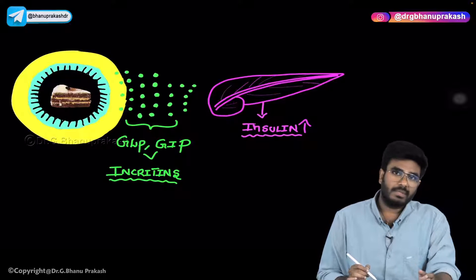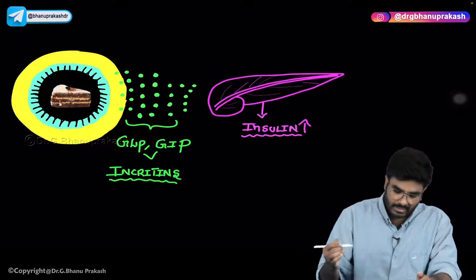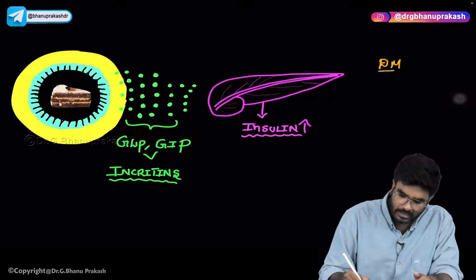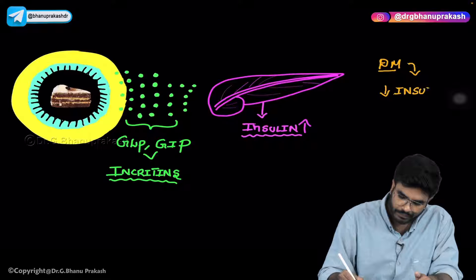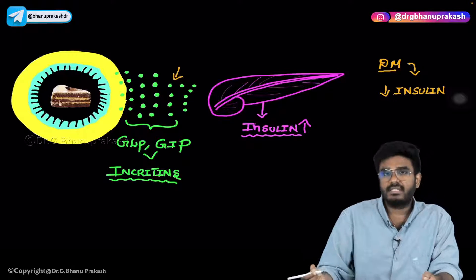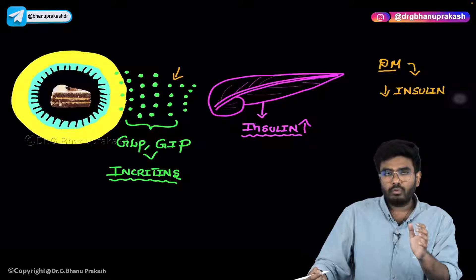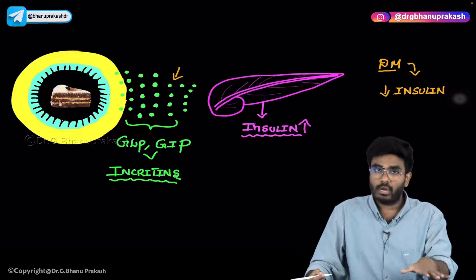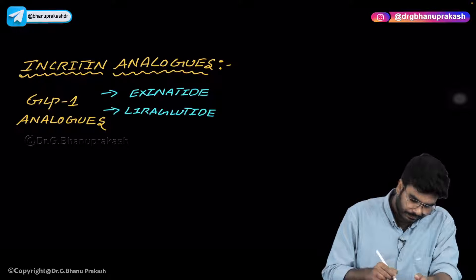Now, how do we use these GI hormones to treat diabetes mellitus? In the condition of diabetes mellitus, the problem is there is decreased insulin. We know one way to increase insulin release: if you use incretin analogs — drugs like GLP and GIP — those drugs can also act on the pancreas and increase the release of insulin. So blood glucose levels will go down in diabetes mellitus. The drugs that are like incretins are called incretin analog drugs.